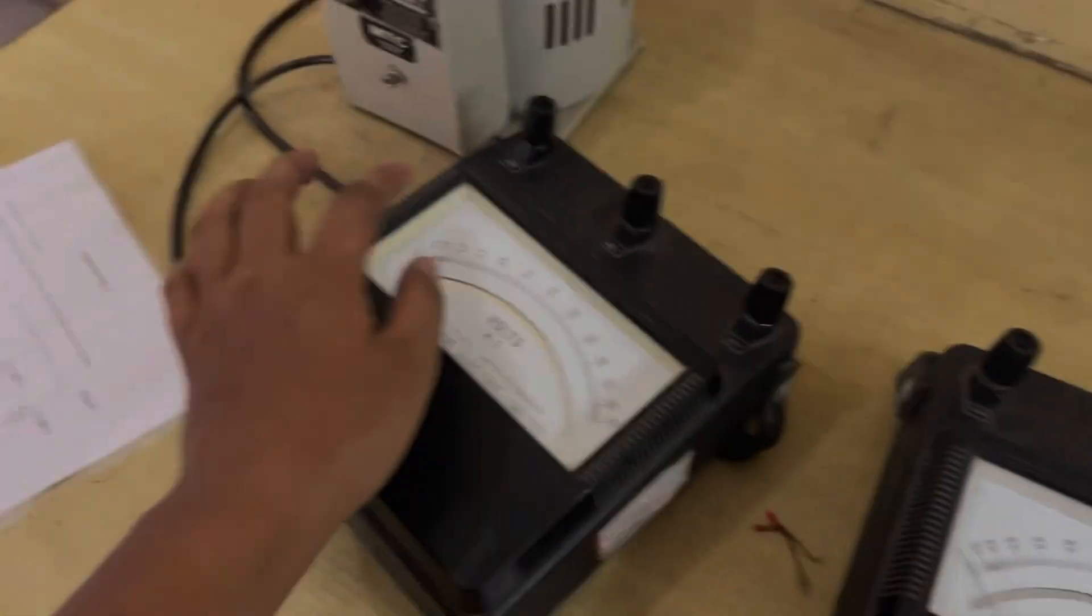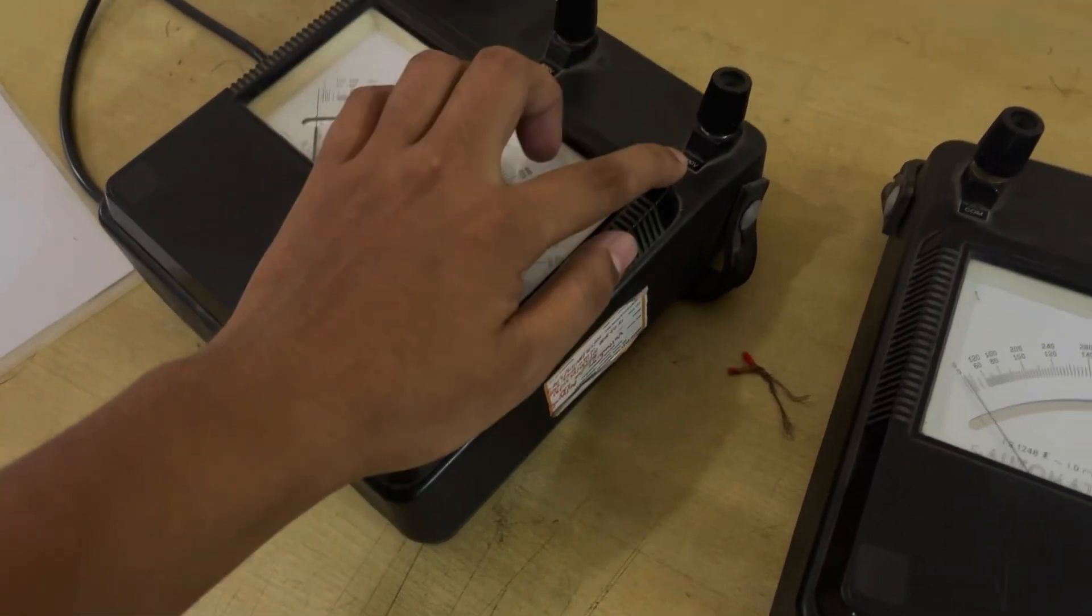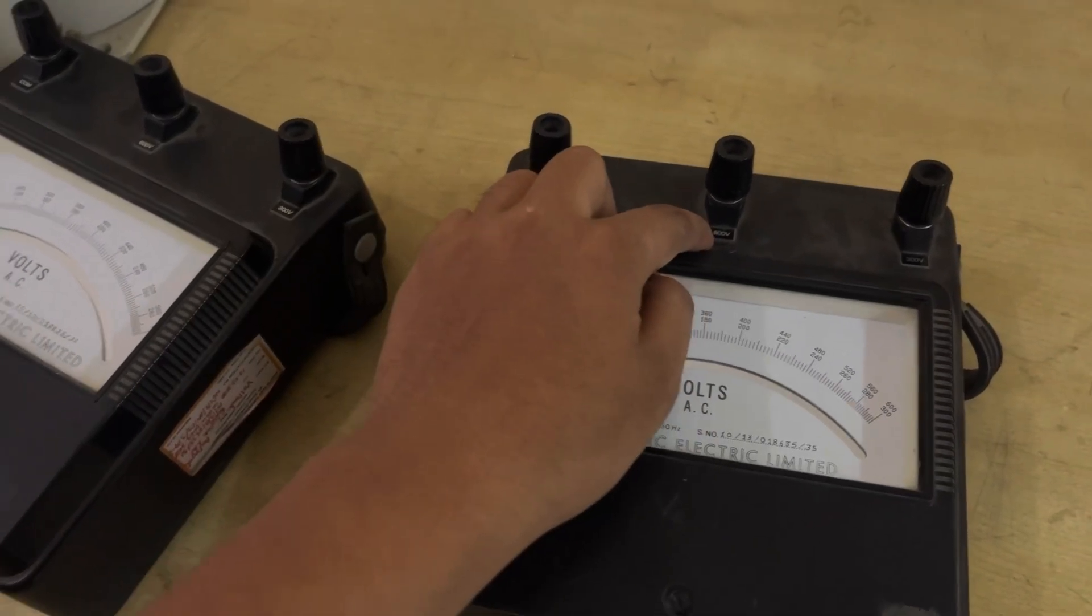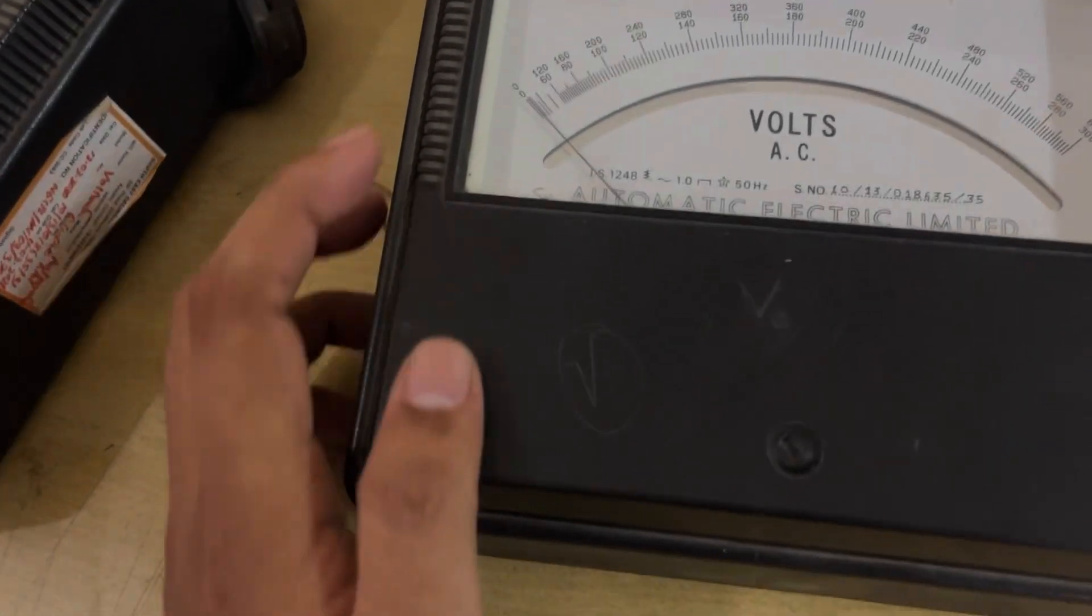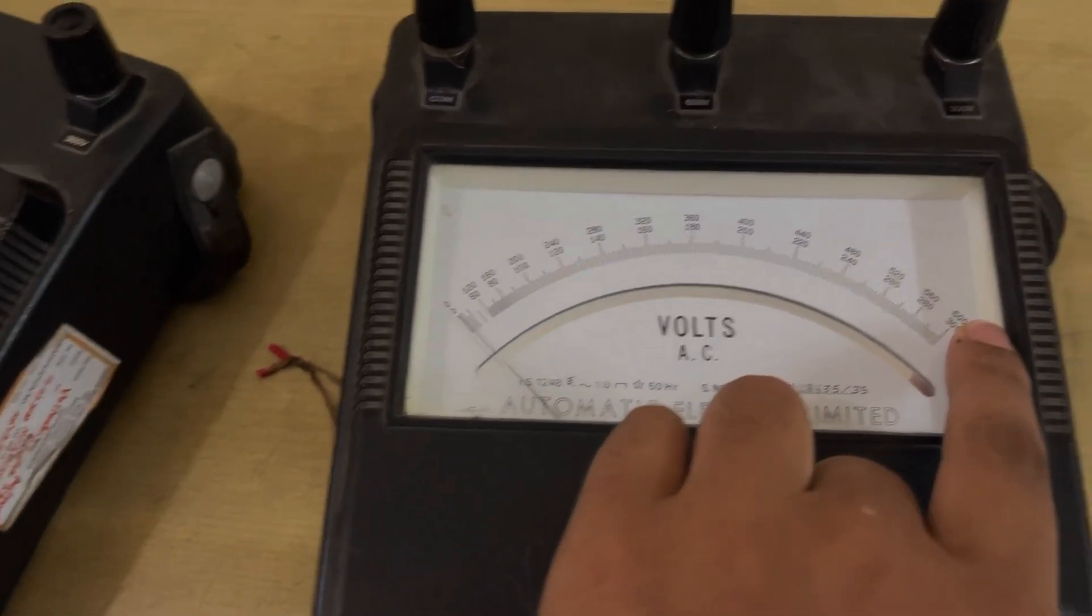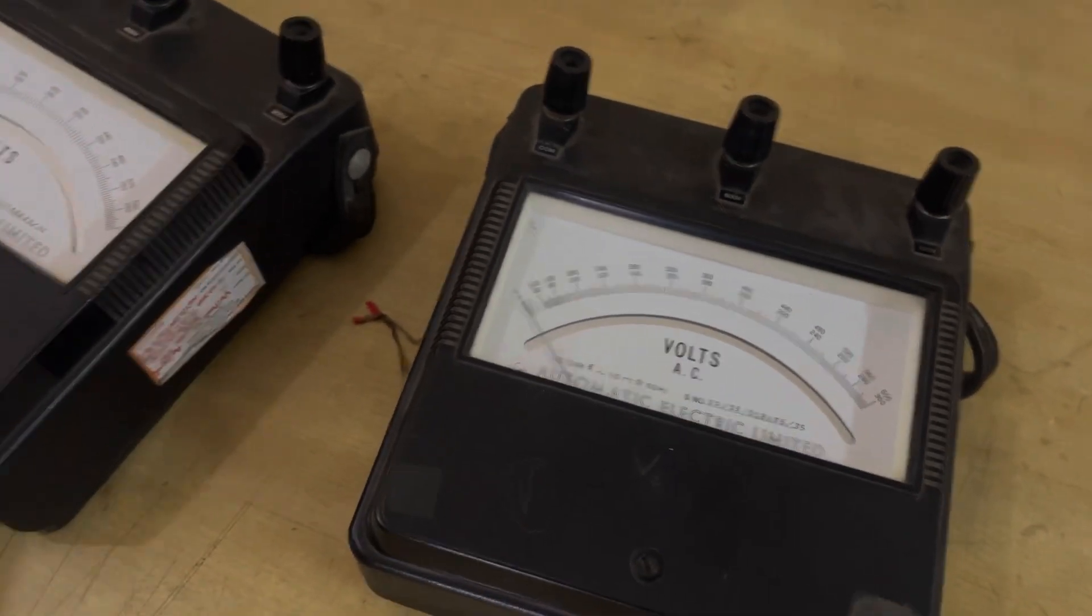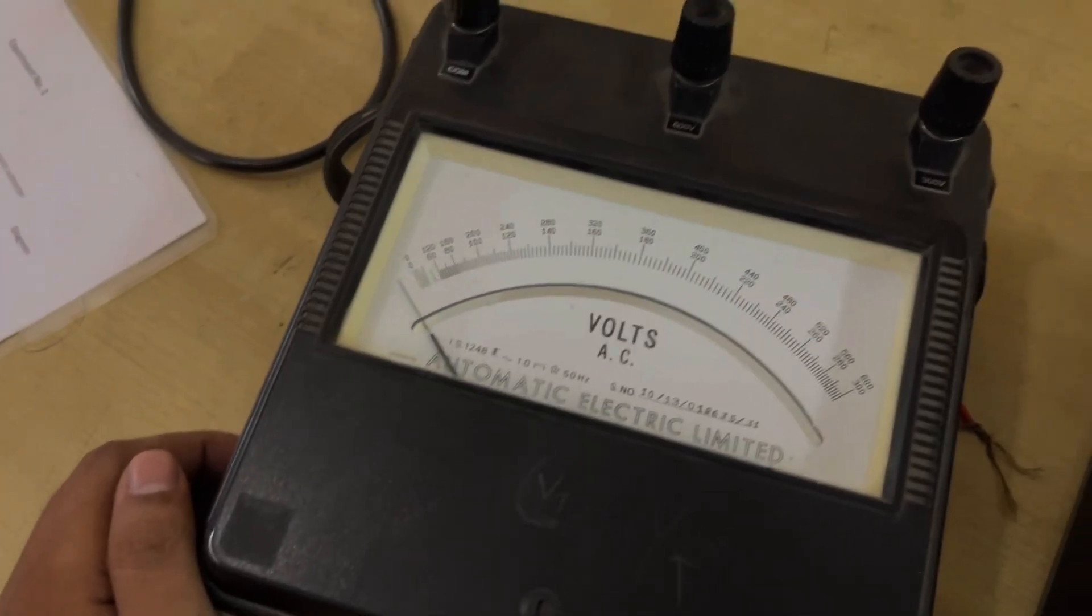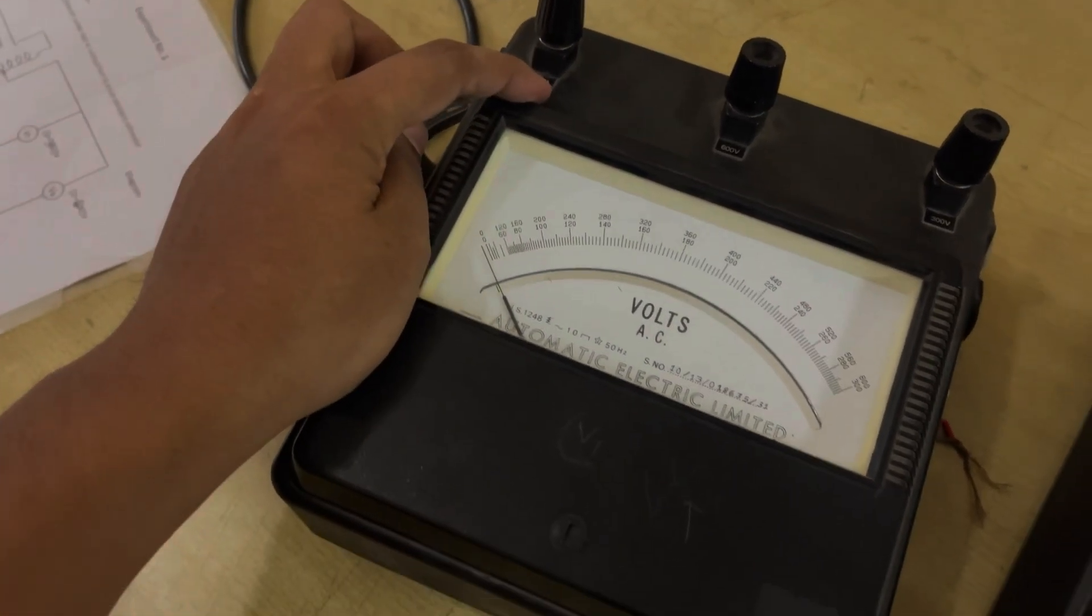First is zero to 300 and second is zero to 600. There are two scales - the down scale is zero to 300 and the upper scale is zero to 600. Same as this meter.